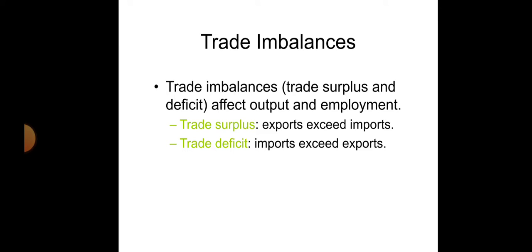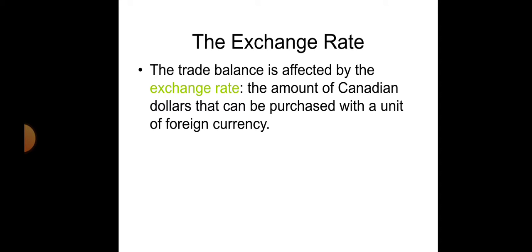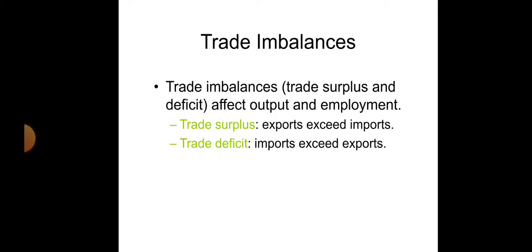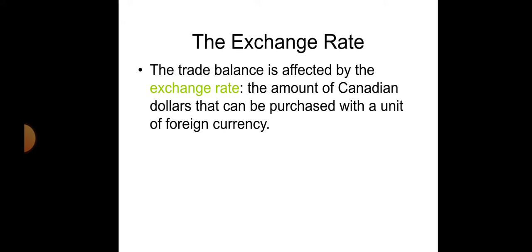Trade imbalances mean trade surplus and deficit, which affect output and unemployment. A trade surplus is when exports exceed imports — this is a good thing. A trade deficit is when imports exceed exports. The trade balance is affected by the exchange rate, which is the amount of Canadian dollars that can be purchased with a unit of foreign currency.